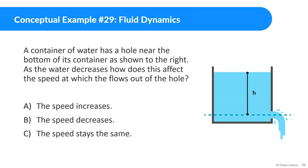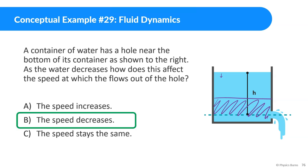A container of water has a hole near the bottom of its container as shown to the right. As the water decreases, how does this affect the speed at which the water flows out of the hole? As this is going to get lower and lower, so let's say the water is all the way over here, what's going to happen is the velocity is going to decrease. There's less pressure and according to Torricelli's Law, the smaller that height is, the slower it's going to go. So the speed decreases.